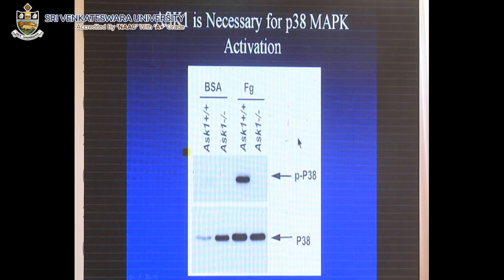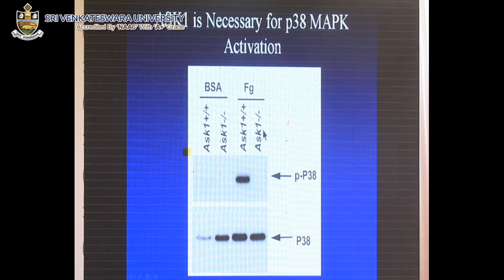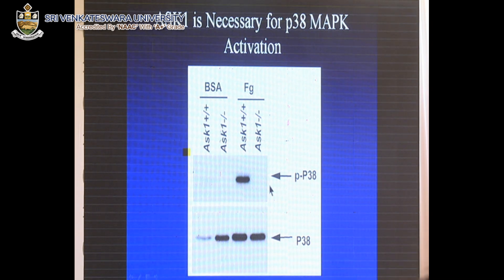In wild-type mice, ASK1 phosphorylates P38 MAP kinase. In the ASK1 knockout, P38 MAP kinase is not phosphorylated at all. This tells us that the MAP kinase cascade is important for thrombus formation.